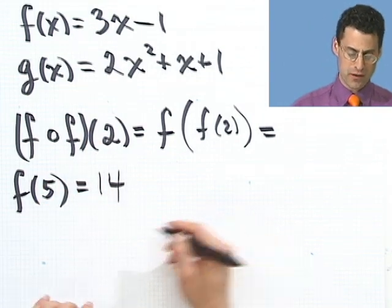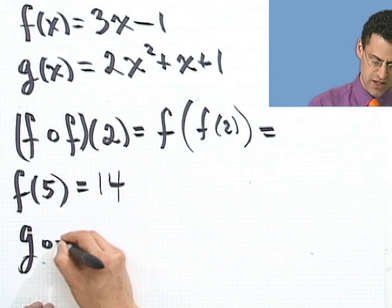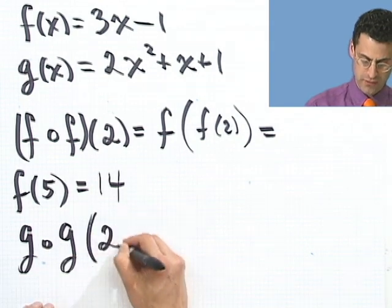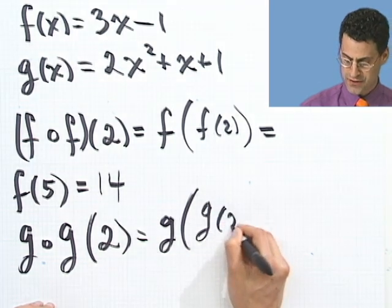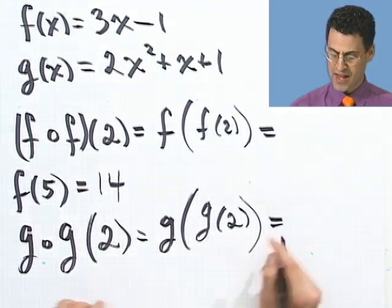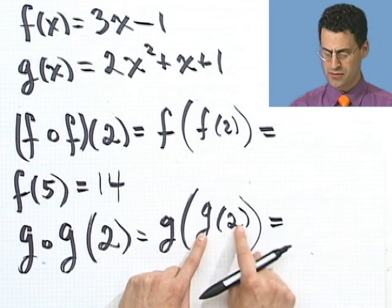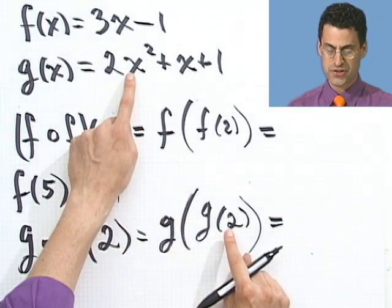So f composed with f evaluated at 2 turns out to be 14. Great. How about g composed with g at 2? So g composed with g of 2 would be g of g of 2. And what is that? Well, first I compute g of 2. That's the inside thing. So I put 2 in for x.